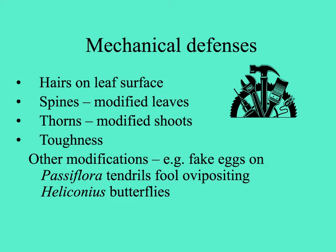Let's consider mechanical defenses first. These include things like spines and thorns. Spines are actually modified leaves. Thorns are modified shoots of plants. Prickles on leaves are sometimes modified epidermal cells. Hairs on the leaf surface and just being very tough are also popular mechanical defenses.